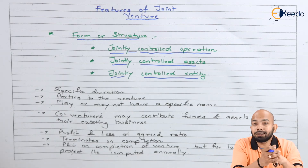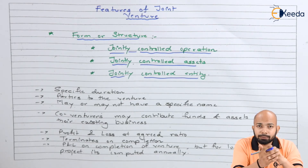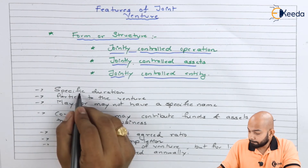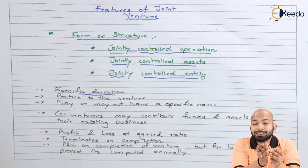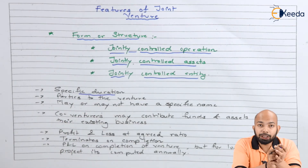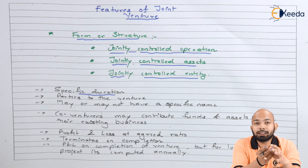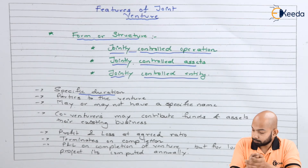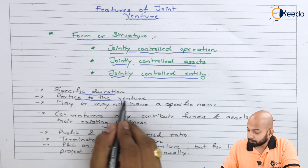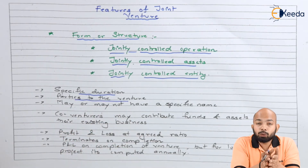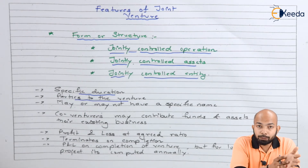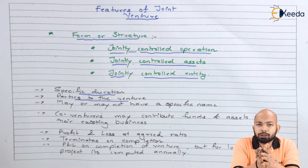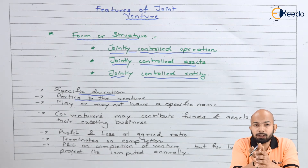Apart from that, there are certain special features. First, there is a specific duration — this duration will either last for weeks, months, or years. The parties to the venture can also be called co-venturers or joint venturers, depending on whatever they want to be called.